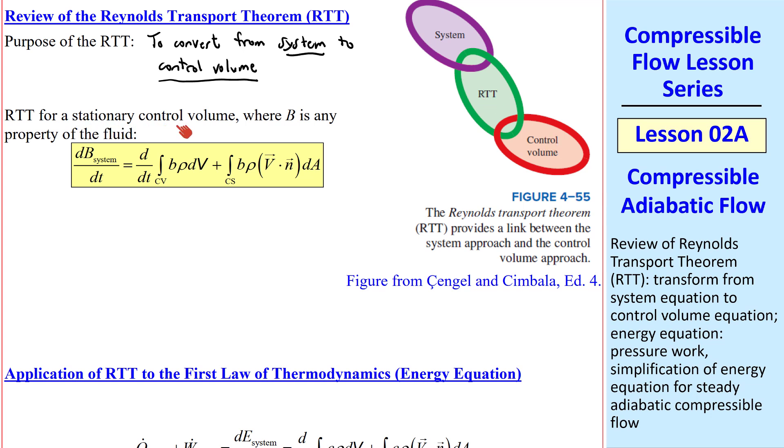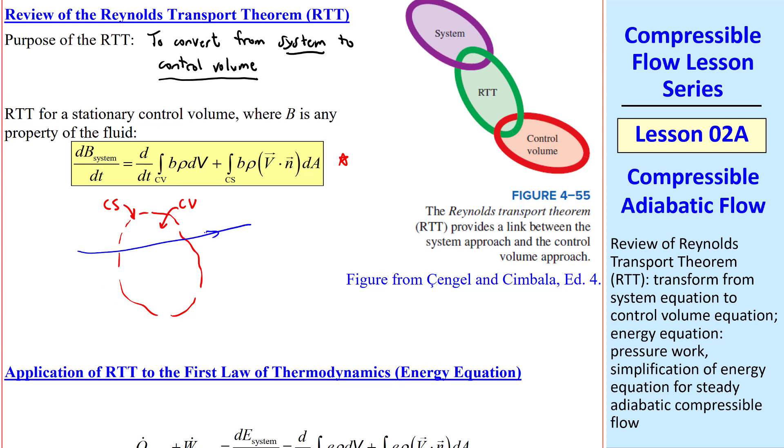Recall for a stationary control volume, where we let capital B be any property of the fluid, this is the RTT. It applies to an arbitrary volume of fluid, which I like to call a potato, where this is the control surface, and the control volume is the entire inside.